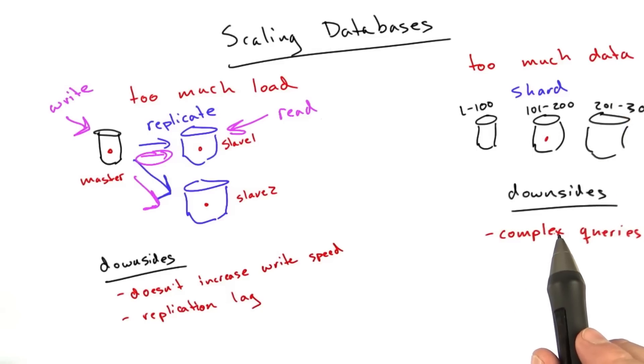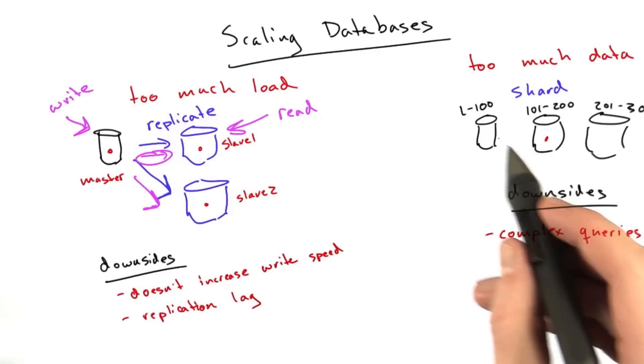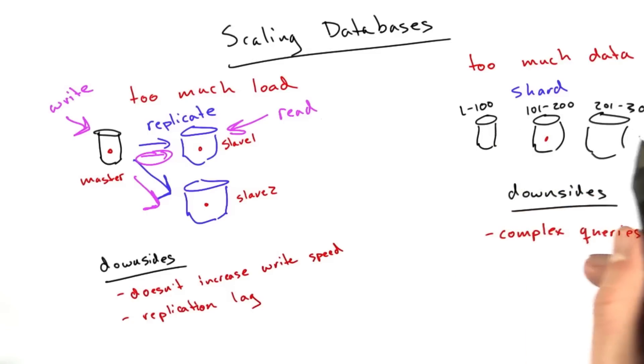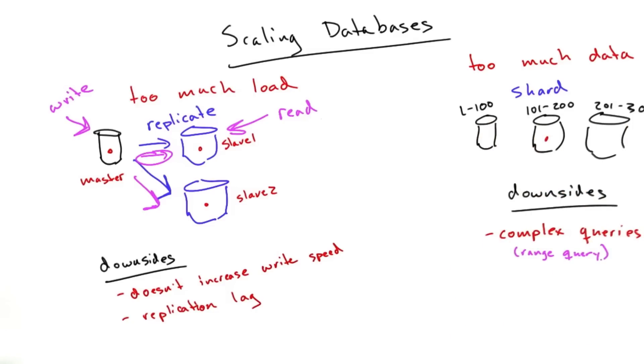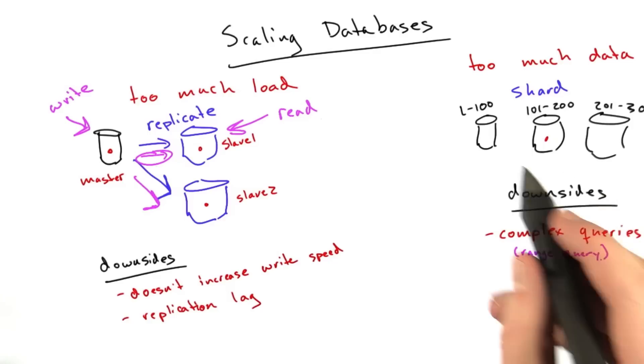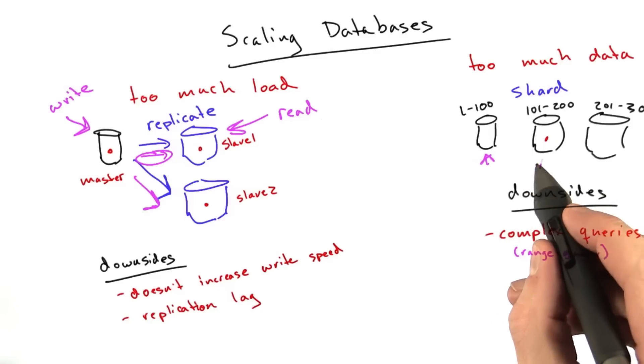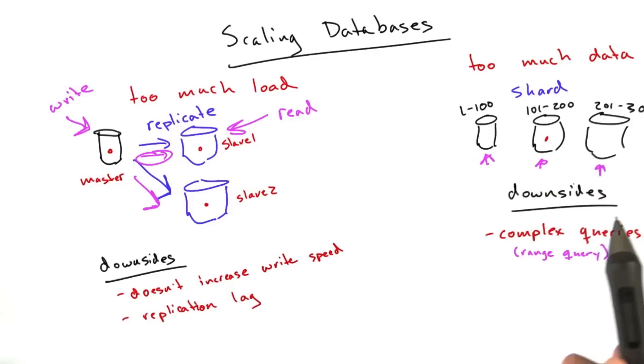One of the downsides is the queries get much more complex. This helps the case of find me the link whose ID is 150. We just say which machine does 150 go to? It hashes to this machine, and we do our read, and that's that. But what if I said get me all the links sorted by hotness?